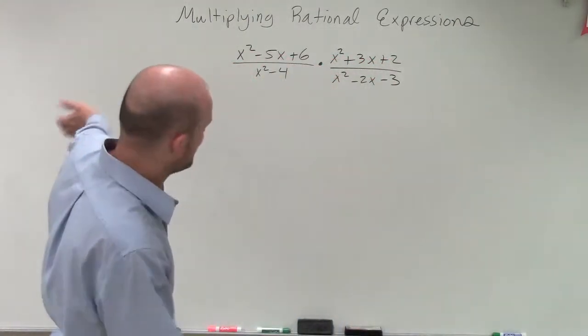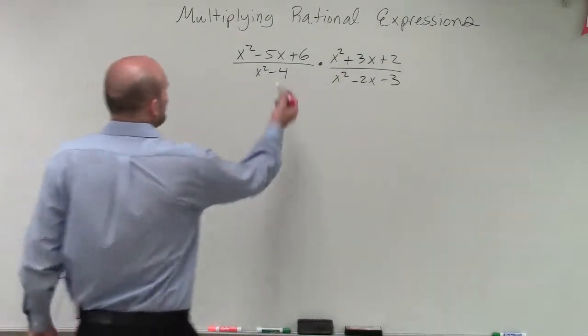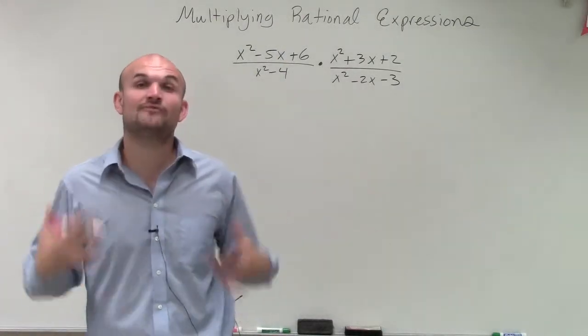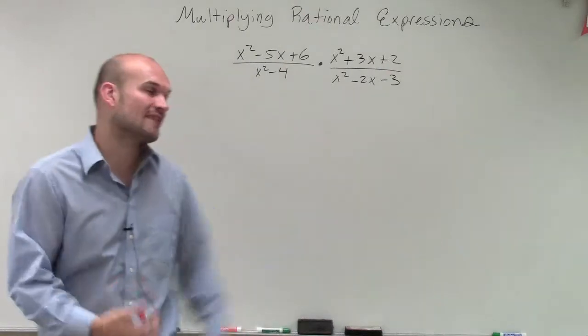We're not going to want to multiply trinomial times a trinomial. That's going to take forever. And we're not going to want to multiply this binomial times a trinomial. So we always want to look into simplifying before we apply the operation. And then once we apply the operation, we always want to try to simplify it again.